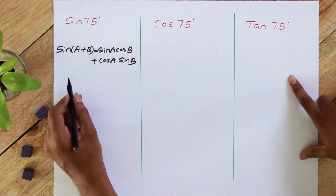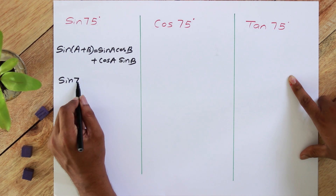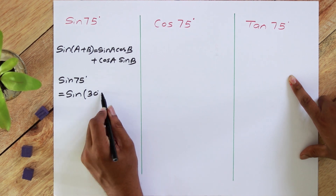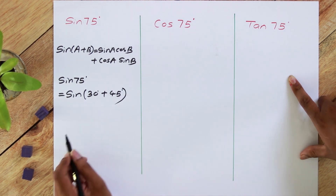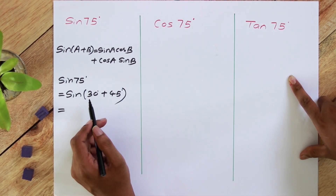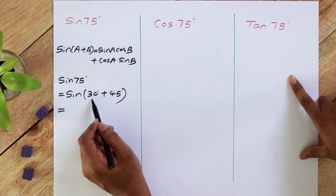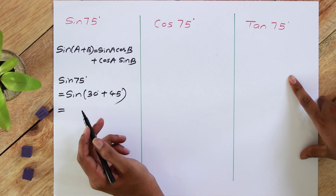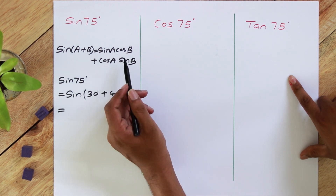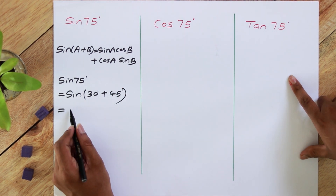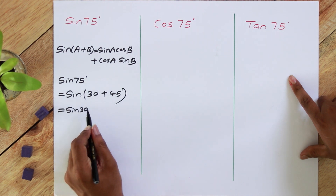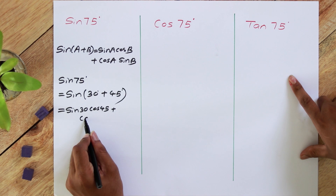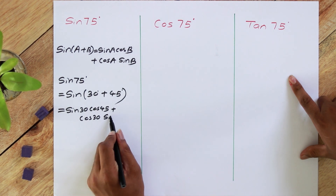Now when you consider sin 75 degrees, we can write it as sin(30 degrees plus 45 degrees), which is in the form of sin(A+B) — instead of A, 30 degrees is there, and instead of B, 45 degrees is there. So we can write it as sin 30 cos 45 plus cos 30 sin 45.